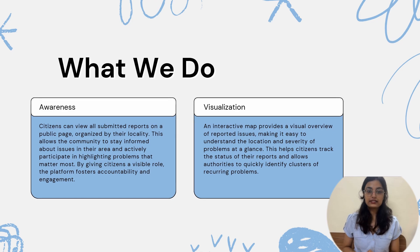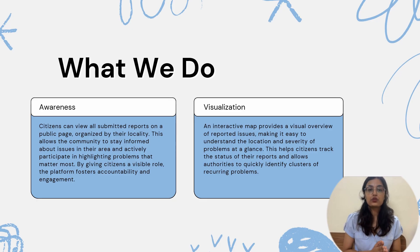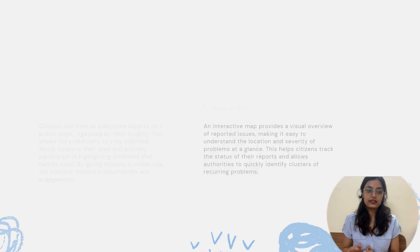These reports are displayed on a public page organized by locality. Citizens can upvote important issues, and an interactive map provides a clear visual overview of all reported problems in the area.